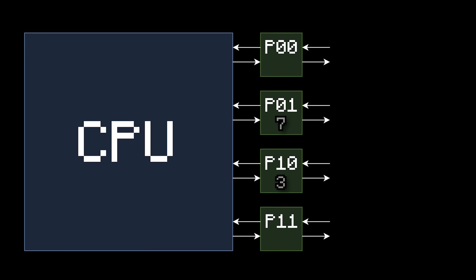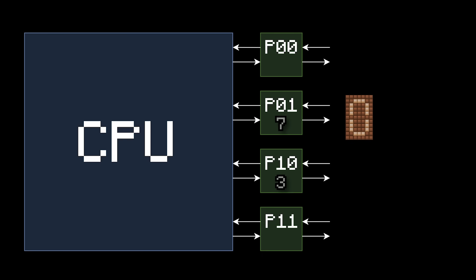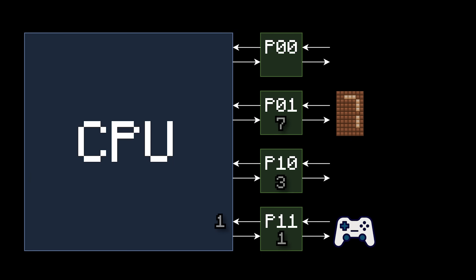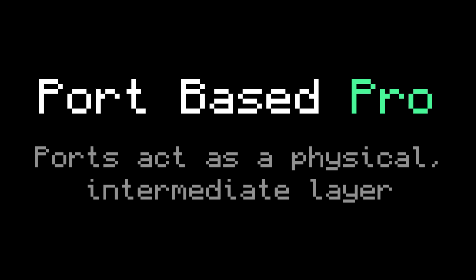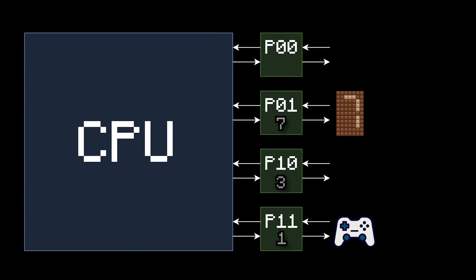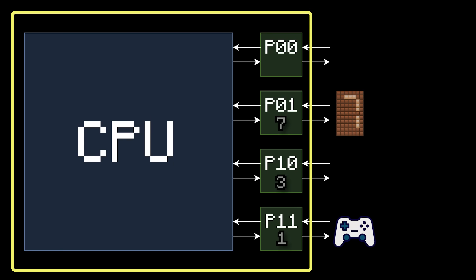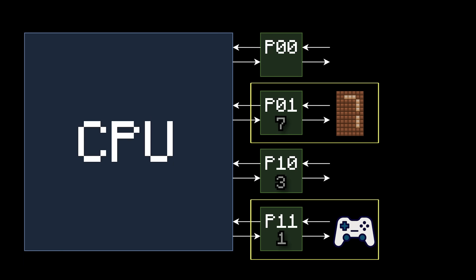For example, maybe one of your devices is a number display. In that case, you could just have it read port 1 and display the 7. And if a device wants to send data to the CPU, like with a controller, just do the reverse — have the device write the data to a port, and now the CPU can read it. This approach is nice because the ports are a physical, intermediate layer between the CPU and the devices. The CPU can see the ports but can't talk to the devices directly, and the devices can see the ports but can't talk to the CPU directly.